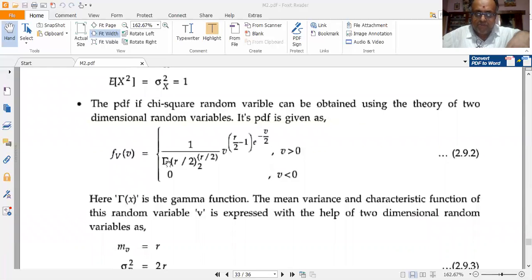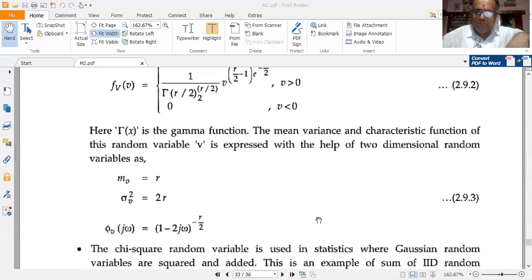Here this symbol is capital Gamma. There are small gamma and capital Gamma, this is capital Gamma. So here Gamma of r/2 stands for the gamma function of r/2.